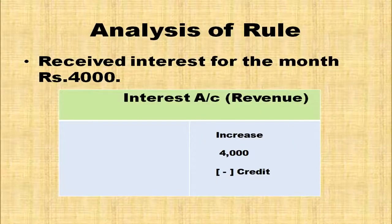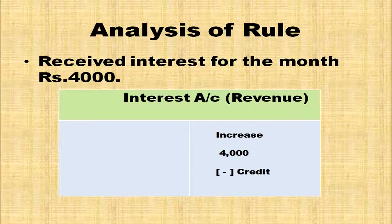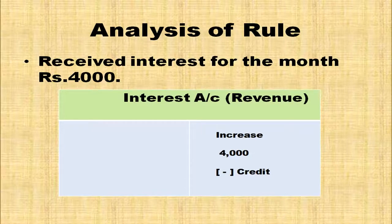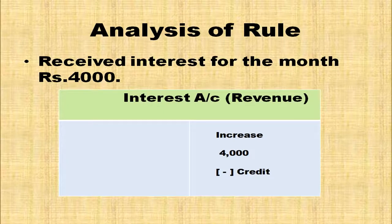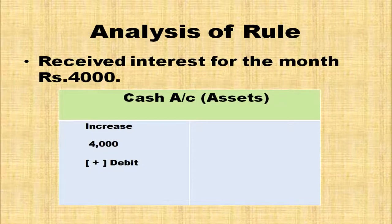Another transaction: Received interest for the month Rs. 4,000. When interest is received, cash is coming inside the business. Cash being an asset — rule for asset: debit when increased, credit when decreased. So, cash is increasing and is debited. Interest is a revenue for this business — rule for revenue: when increased, it is credited. So, cash account will be debited and interest account will be credited.